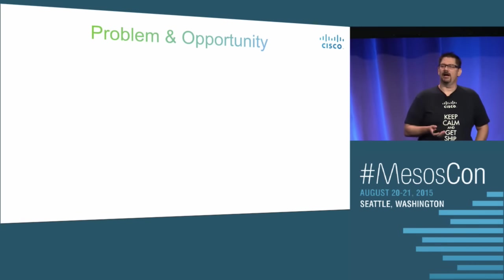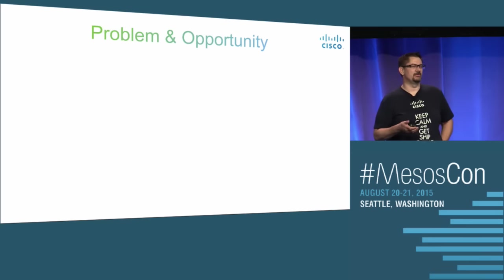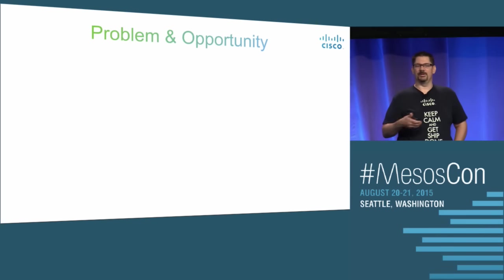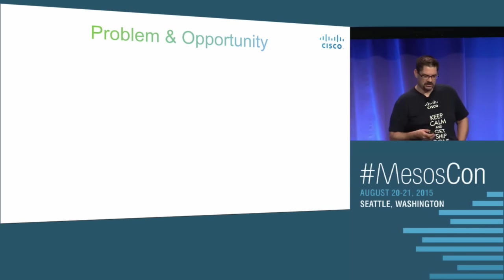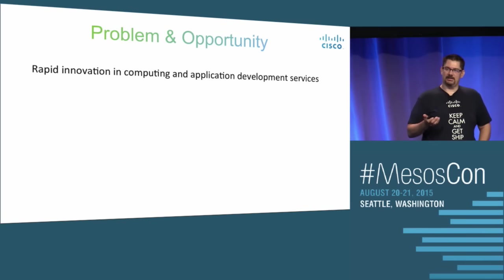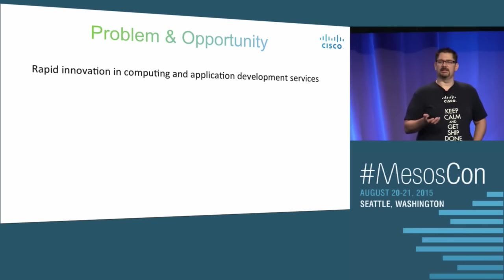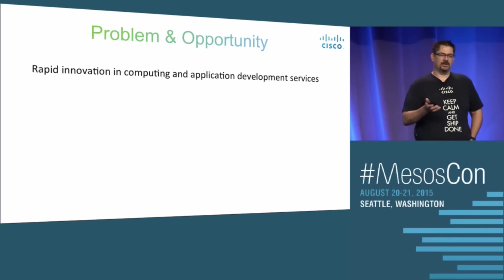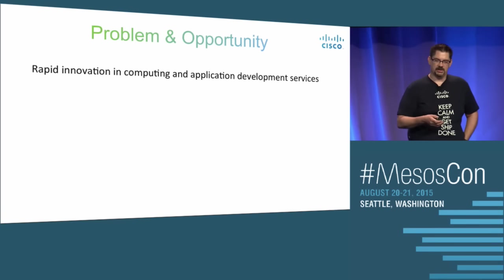It's an exciting time, not only in Seattle and at MesosCon, but in our industry — what's happening for development and for application acceleration, bringing your services to market quicker. The rapid change of pace in the industry is incredible right now. At Cisco, we call this digital disruption or software-defined disruption. Companies like Uber, Amazon, and Netflix have really disrupted the industry, and every company is having to become a software company.